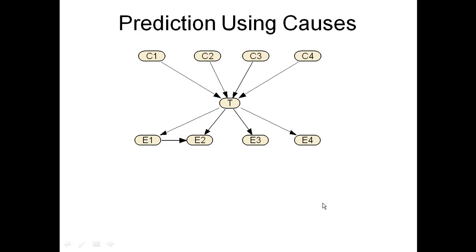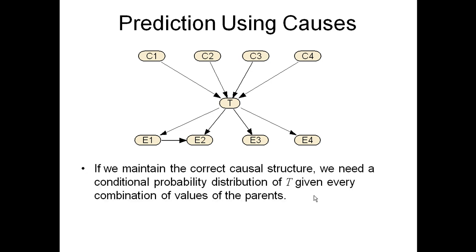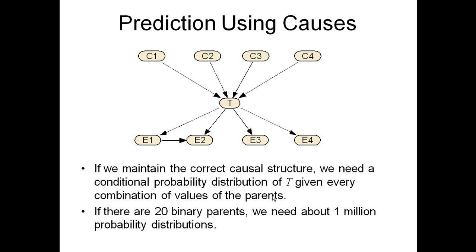Causes pose a much more difficult problem than effects, because we would like to maintain the correct causal structure and thus represent the probability distribution correctly. A Bayesian network only represents a joint probability distribution if the conditional dependencies amongst the variables are satisfied. If we maintain the correct causal structure, we would need a conditional probability distribution of T given every combination of values of the parents. With only 10 binary parents, we would need about 1 million probability distributions, and we would essentially never have enough data — so it's not really a feasible solution.